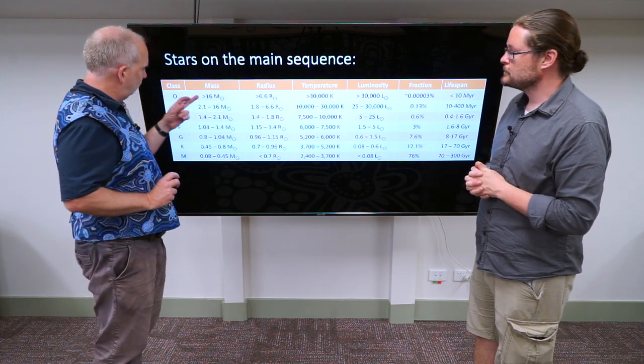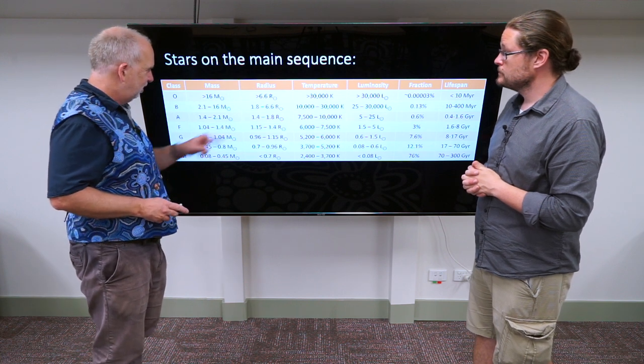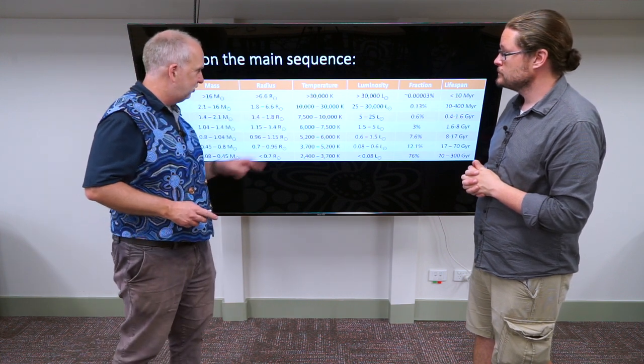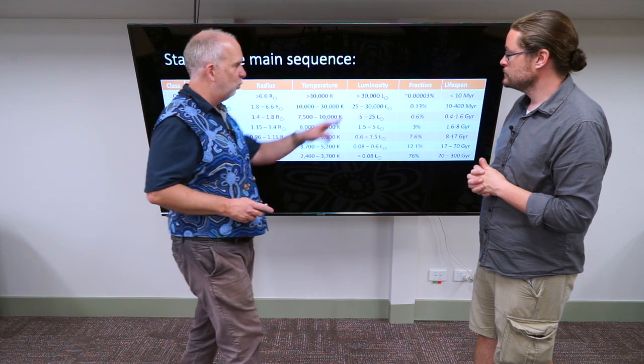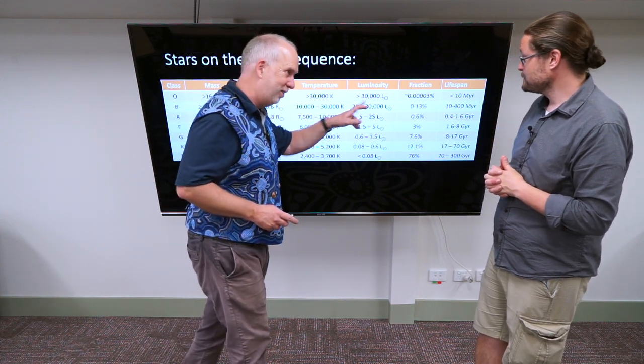And so the O stars, we're talking about, they're more than 16 solar masses, they're more than six times the radius of the Sun, hotter than 30,000 degrees, more than 30,000 times the brightness of the Sun.